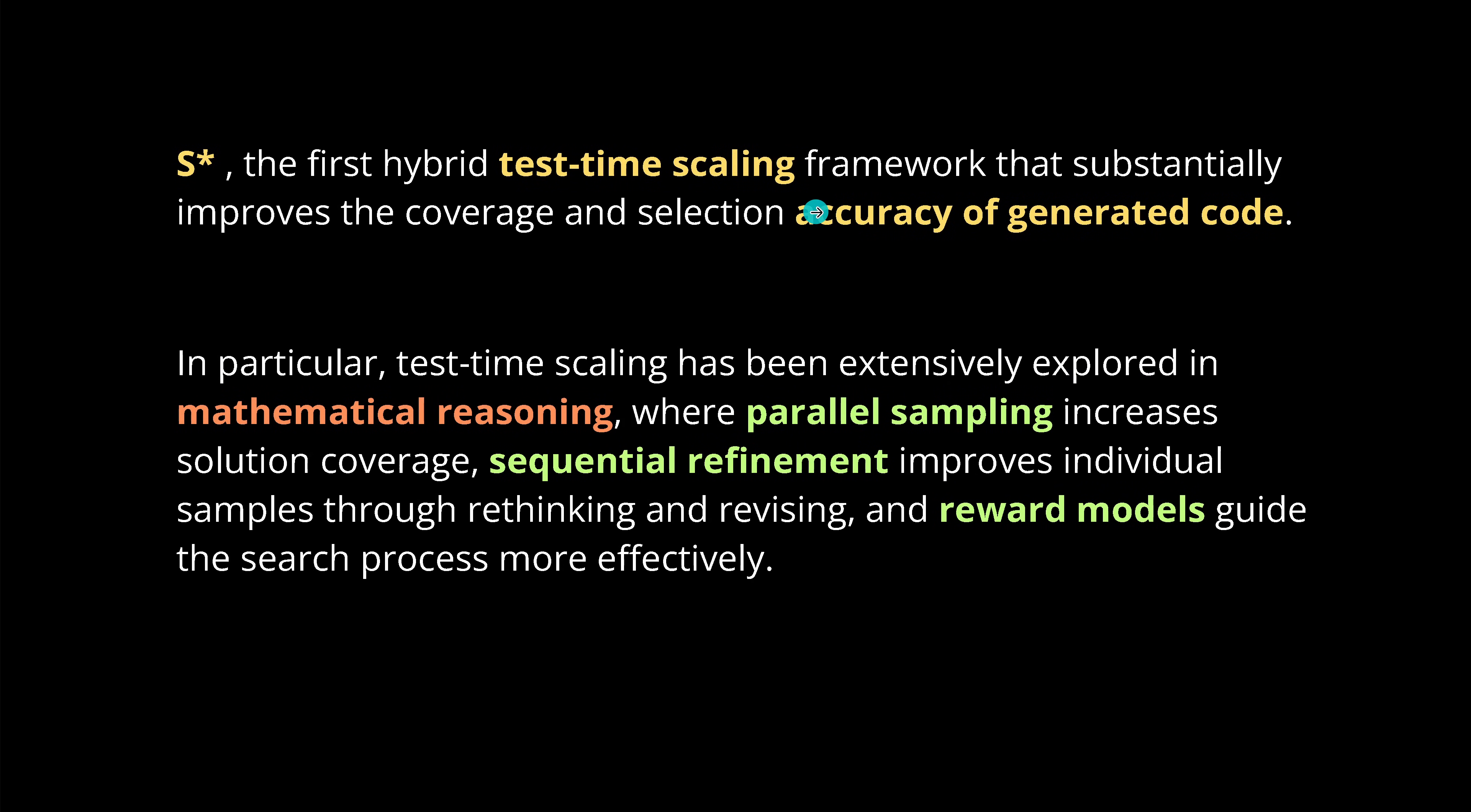We have S-Star, the first hybrid test time scaling framework to improve your accuracy of AI generated code. The principles are identical to what we had in mathematical reasoning, because test time scaling was extensively discussed in multiple videos. We had three ideas: parallel sampling that increases solution coverage, eventual refinement that improves individual samples through rethinking and revising.